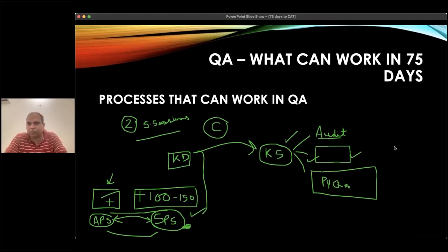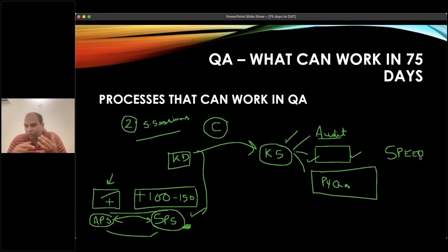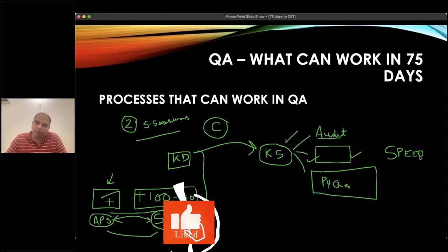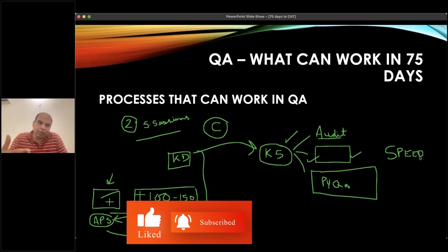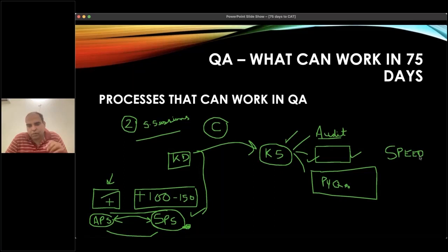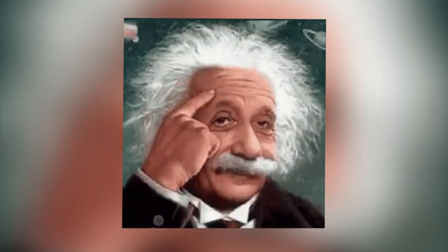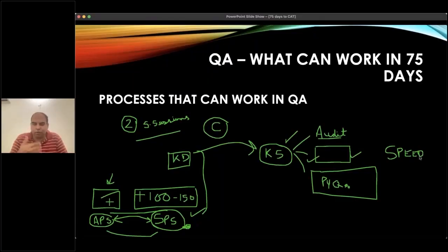If you're knowledge sufficient, then the focus shifts to speed on that topic. Whatever study sessions you do, keep the pencil aside and try to take as many processes mentally as possible — speed, speed, speed. Form the solution in your mind without writing. If you reduce your writing, your speed will go up automatically. And then you still have to work on your calculations. So these three things — knowledge, speed, and calculations — are the processes that you work on in Quants. There is no rocket science in it.